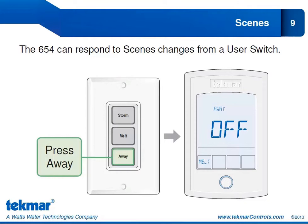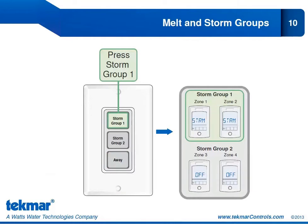For a multi-zone system, we have developed what we call melt groups and storm groups, so you don't need multiple user switches. For example, in a system with a driveway, front walkway, side pathway, and patio — the driveway and front walkway are high priority areas where you want to melt snow first, while the side walkway and patio are lower priority. You can separate those zones into different storm groups.